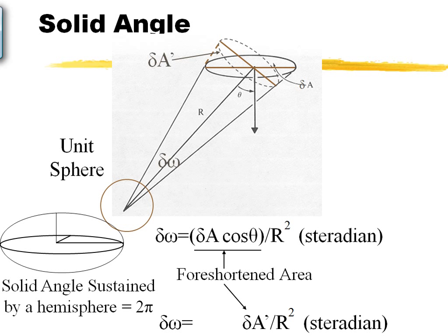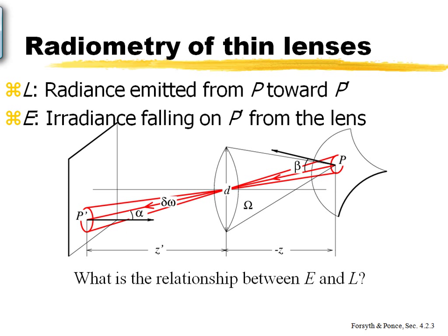Any unit angle we describe is always going to be on the sphere we have conceptualized, and that's going to be across a hemisphere — the top part of the sphere. Now, if we plug this into our imaging geometry, we have a point P on some surface that projects onto P prime based on our thin lens geometry. We know the relationship between P and P prime. What we want to now describe is the relationship between radiance and irradiance.